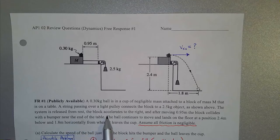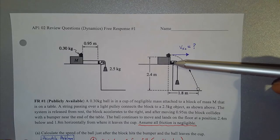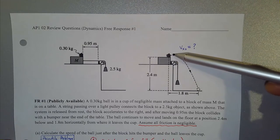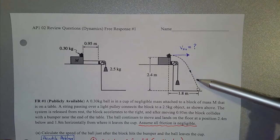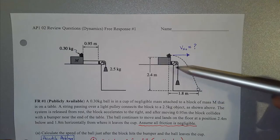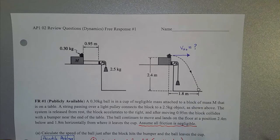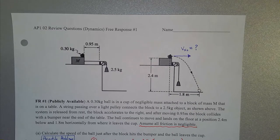The system is released from rest. The block accelerates to the right, and after moving 0.95 meters, the block collides with a bumper near the end of the table. The ball continues to move and flies out of the cup, landing on the floor at a position 2.4 meters below and 1.8 meters horizontally from where it leaves the cup. Assume all friction is negligible.